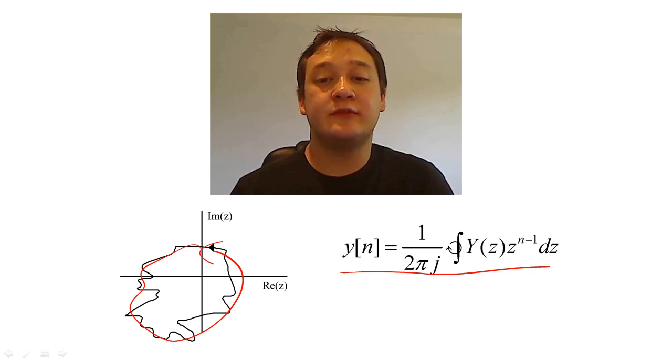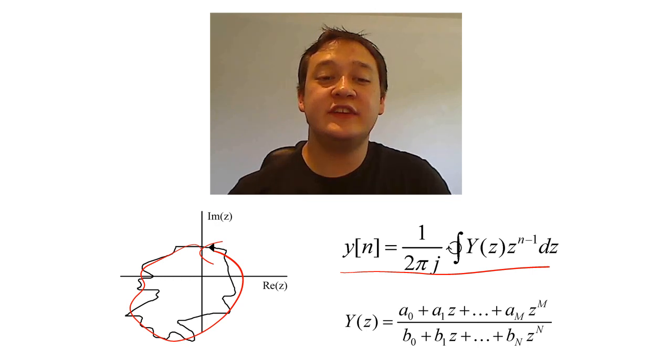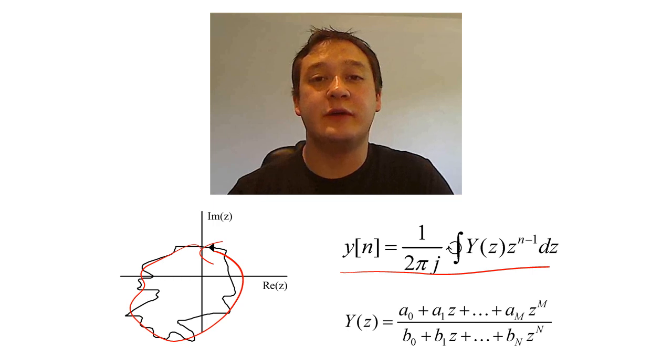This method is particularly powerful if the Z-transform sequence is a rational function, i.e., a ratio of polynomials.